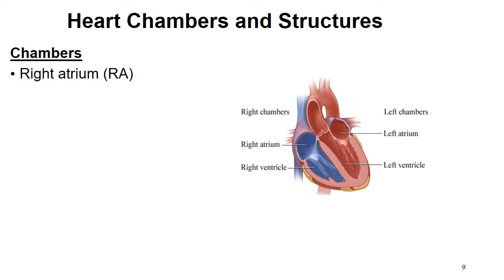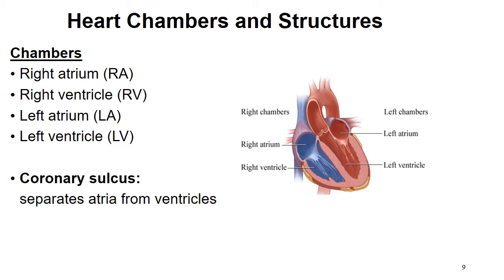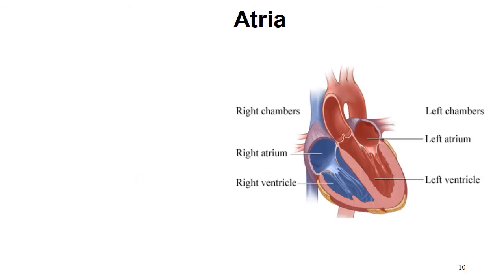The four chambers, abbreviated for this presentation: right atrium (RA), right ventricle (RV), left atrium (LA), and left ventricle (LV). These are the four major chambers of the heart — you will need to know these on tests and quizzes. The coronary sulcus is a structure that separates the atria from the ventricles. Atria is the plural of atrium. We're going to focus initially on the top half of the heart, which is the atria — you have two of them, right and left.